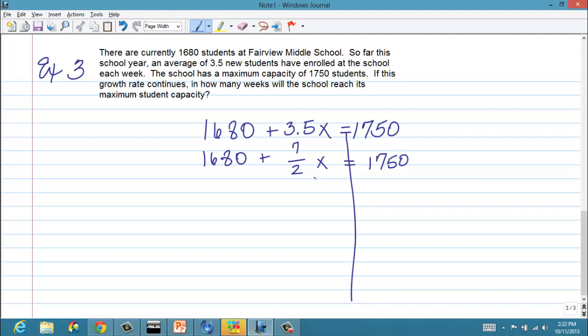At any rate, the process that you're going to use is the first one that I introduced. Because we only have one fraction and it happens to be the coefficient on the variable. Okay? So, I would say what we would do first is to subtract the 1680 from both sides. Because it's currently positive, we want to use the opposite, which is the negative. Okay? And once we do that, we'll have 7 halves x equals 70.